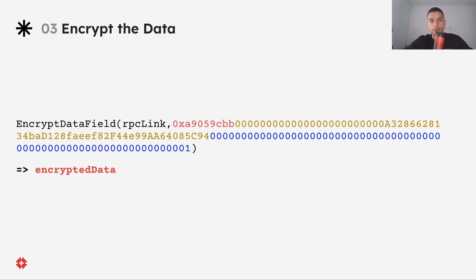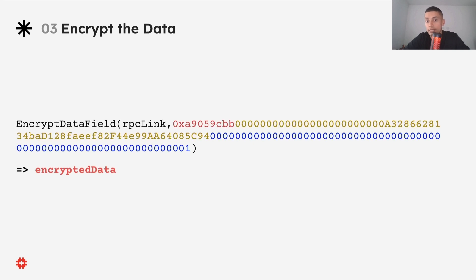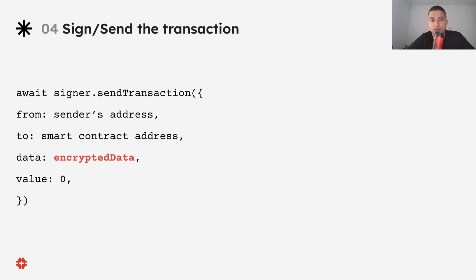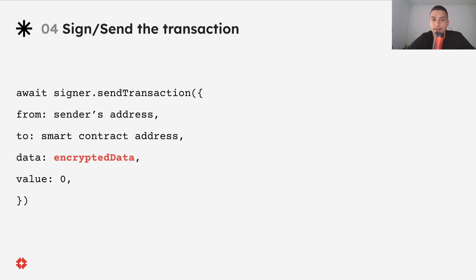The third step is to encrypt the data using the 'encryptDataField' function provided by SwissTronic.js. We send two parameters: the first is the RPC node, and the second is the data to encrypt — the function selector and the encoded function arguments. The last step is to sign and send the transaction to the network. The most important thing here is to send the encrypted data; otherwise, the node will not be able to decrypt it and will revert the transaction.